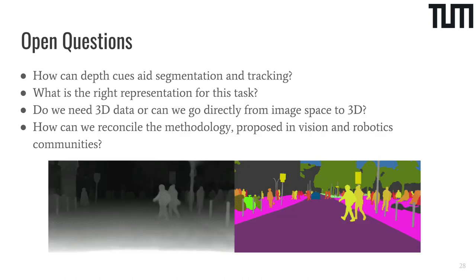The third research direction we would like to see explored further is whether potential differences due to data modalities can be addressed by future work. Could depth cues potentially improve segmentation and tracking performance? What is the overall right representation for this task? Will we need 3D data and therefore lidar sensors on mobile agents, or can we also go directly from image space into a 3D world representation? And how can we reconcile the methodology proposed in the vision and robotics communities? We are very excited for all the future work to come that will try to answer these questions.